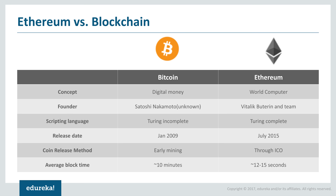Another key factor is the number of transactions each can process. Bitcoin blockchain can process only about 3 to 4 transactions per second, whereas Ethereum blockchain can process about 15 transactions per second. The time taken for creating a block also differs: an average block in Bitcoin gets created every 10 minutes, whereas in Ethereum it's about 12 to 15 seconds. The reward system also differs: in Bitcoin it's about 12.5 Bitcoins, in Ethereum it's only about 5 Ethers.